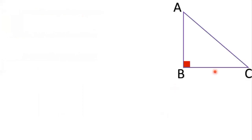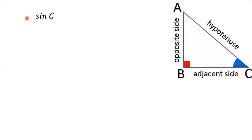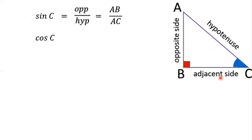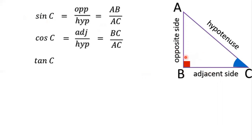Now consider a right triangle ABC where AC is the hypotenuse. Now consider angle C. With respect to angle C, AB is the opposite side and BC is the adjacent side. Sin C equals opposite by hypotenuse, that is AB by AC. Cos C equals adjacent by hypotenuse, that is BC by AC. Tan C equals opposite by adjacent, that is AB by BC.